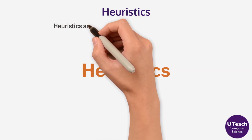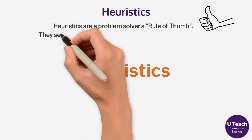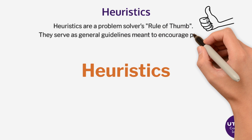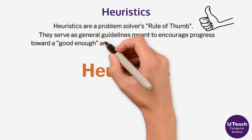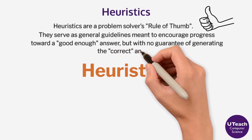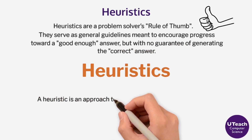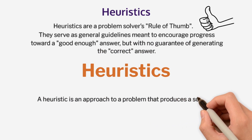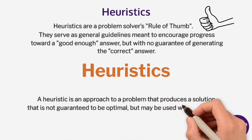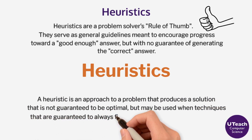Heuristics are a problem solver's rule of thumb. They serve as general guidelines meant to encourage progress toward a good enough answer, but with no guarantee of generating the correct answer. A heuristic is an approach to a problem that produces a solution that is not guaranteed to be optimal, but may be used when techniques that are guaranteed to always find an optimal solution are impractical.